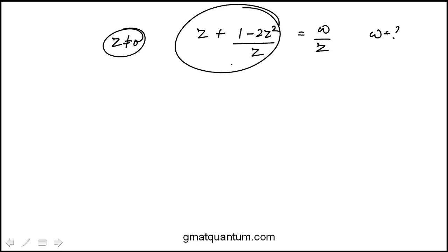So first I'm going to combine these two. Denominator z, numerator becomes z squared plus 1 minus 2 z squared. And this numerator simplifies to 1 minus z squared, because we have minus 2 and then 1 over z.